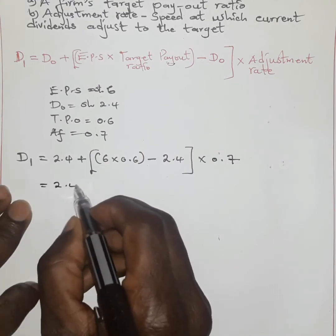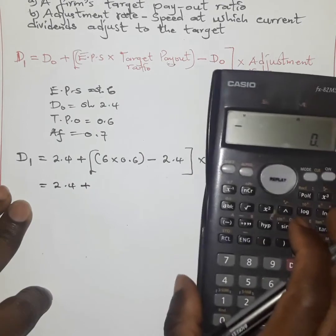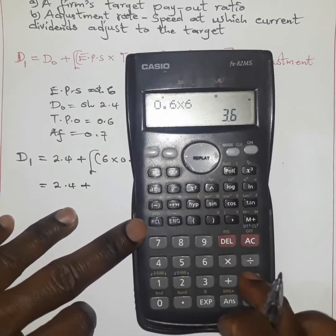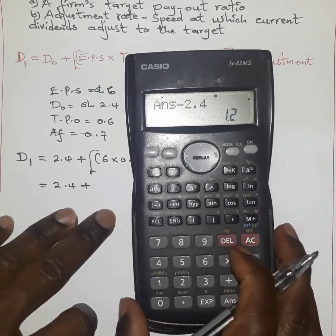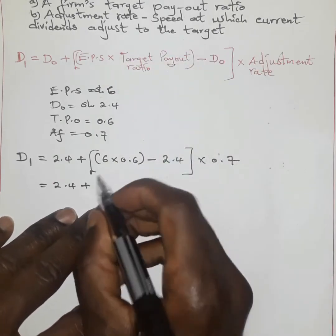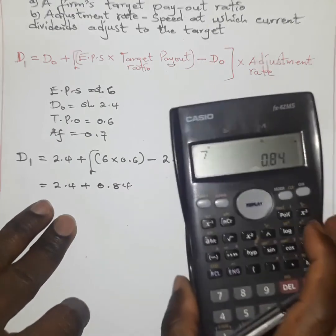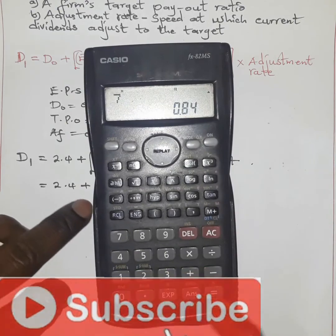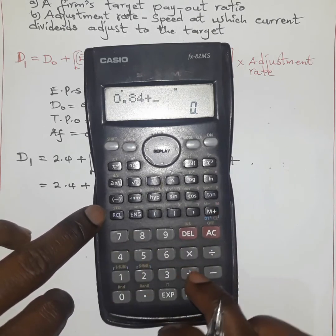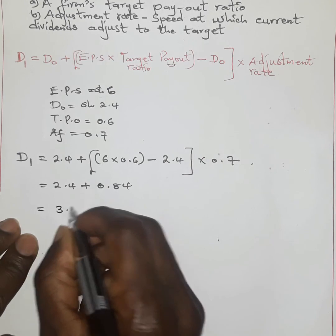Working through the calculation: 0.6 times 6 gives 3.6, minus 2.4 gives 1.2. Then 1.2 times 0.7 gives 0.84. Adding this to the previous dividend: 2.4 plus 0.84 gives a value of 3.24 shillings.